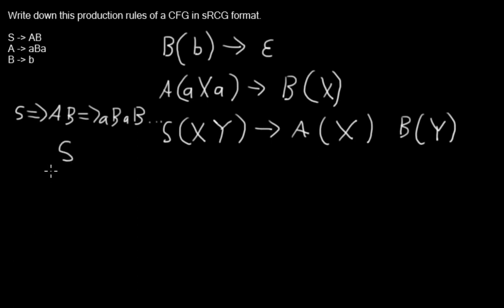You have the S root node, you have two daughter nodes, A and B. The A has three daughters, a, B and a, and that B will have a daughter b, just like that one.